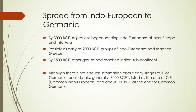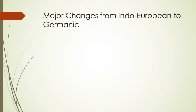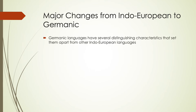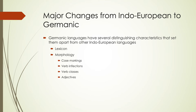There are many different linguistic characteristics that set Germanic languages aside from other Indo-European branches. We'll focus on several of them in this lecture, including lexicon, morphology, case markings, verb inflections, verb classes, adjectives, and semantics. The phonology and sound system will be covered in the next lecture, as a lot of changes happen there and an entire lecture will be devoted specifically to that.